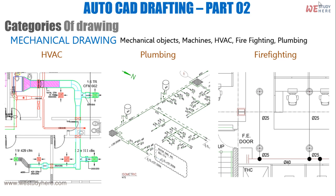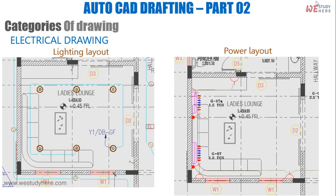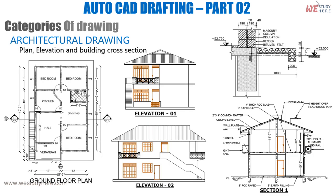Mechanical drawing is one category, but depending on the project, HVAC, firefighting, and plumbing can be separate categories or different disciplines. Electrical drawing covers lighting layout and power layout — for example, how ceiling lights and recess lights are arranged, and the location of power outlets.